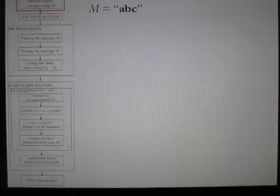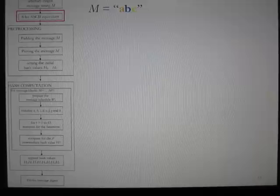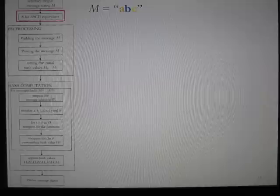The given message M is the string of small letters A, B, C. This string is converted to its 8-bit ASCII equivalent. The 8-bit ASCII equivalents of a, b, and c are shown. It is emphasized that the string is lowercase, since uppercase A, B, and C have a different 8-bit ASCII representation.